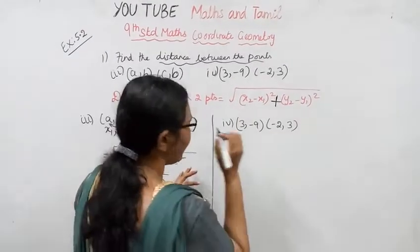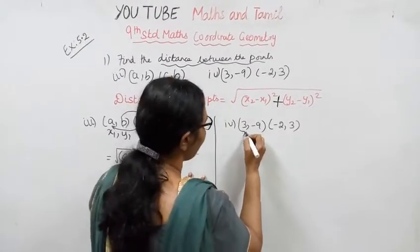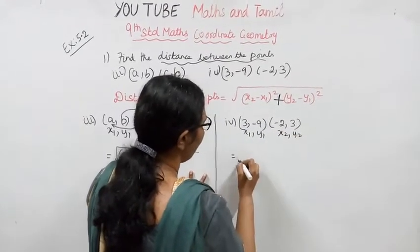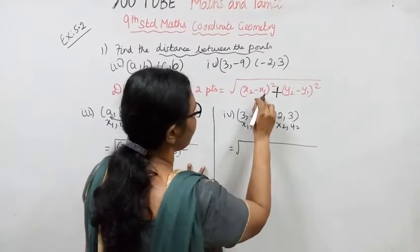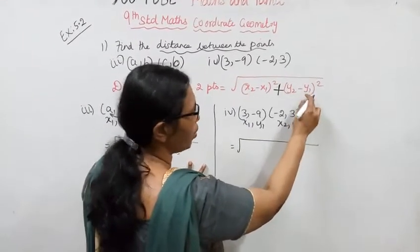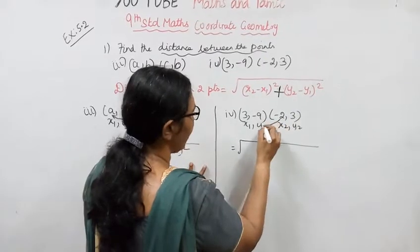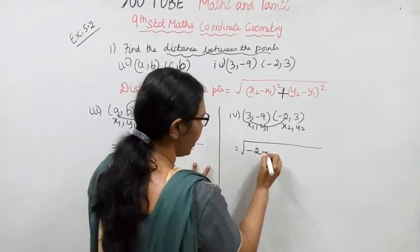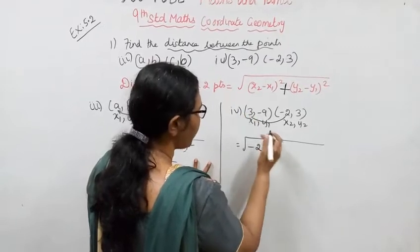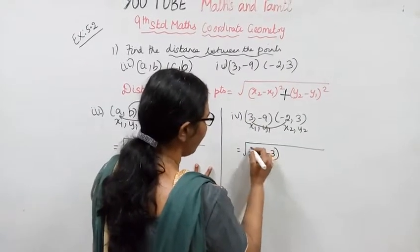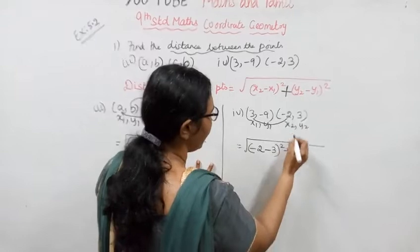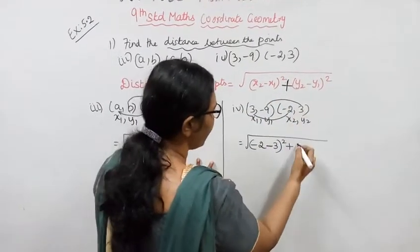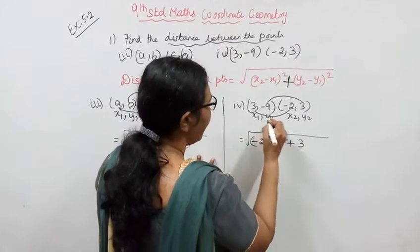First you need to get x1, y1, x2, y2. Using the formula: x2 minus x1, and y2 minus y1. Substituting the values: x2 minus x1 gives minus 2 minus the formula value, which gives minus 3, the whole square, plus y2 minus y1, which gives y2 minus y2 minus.